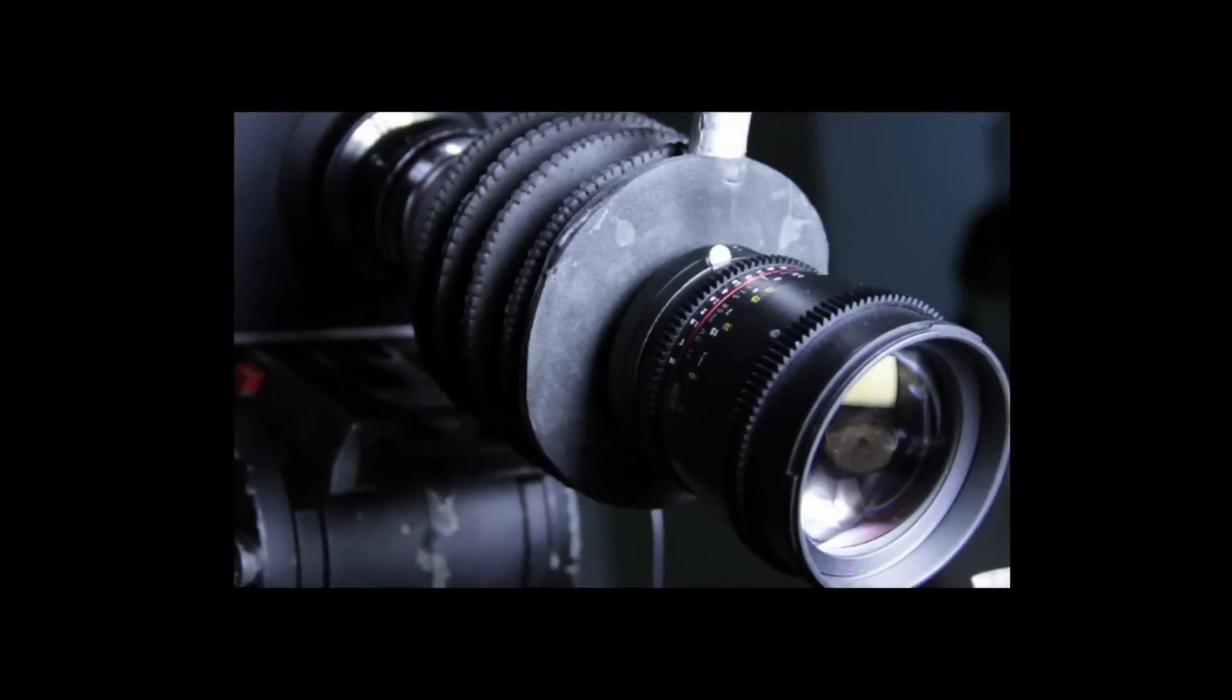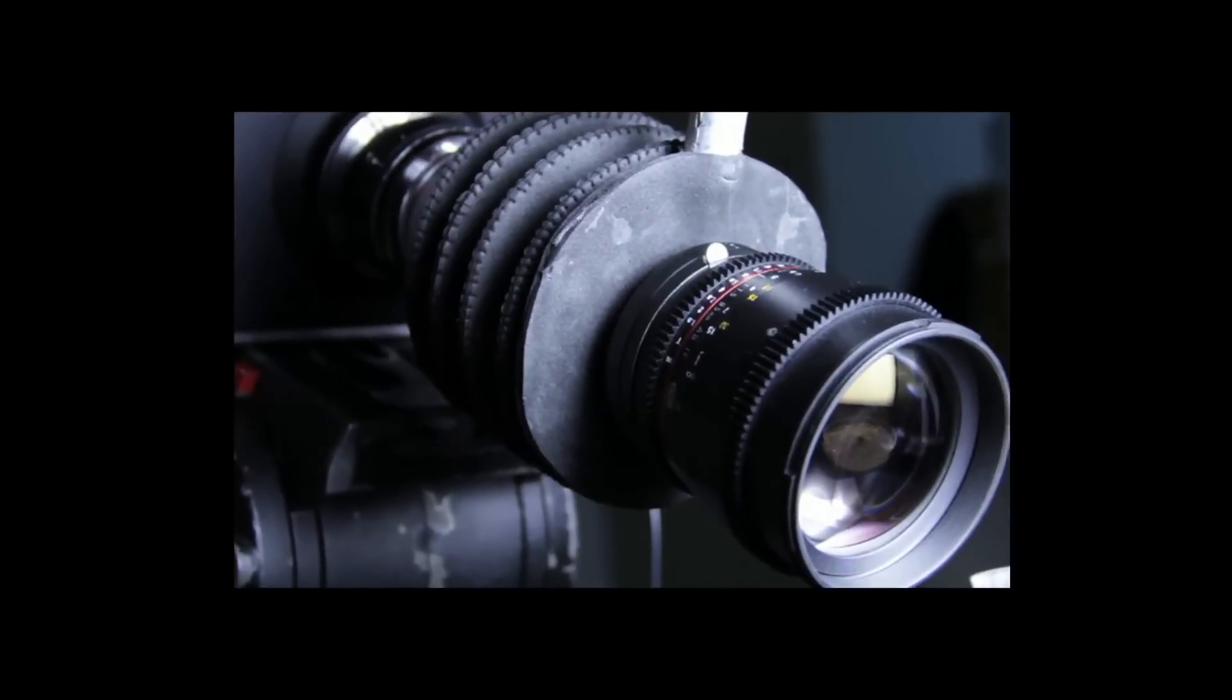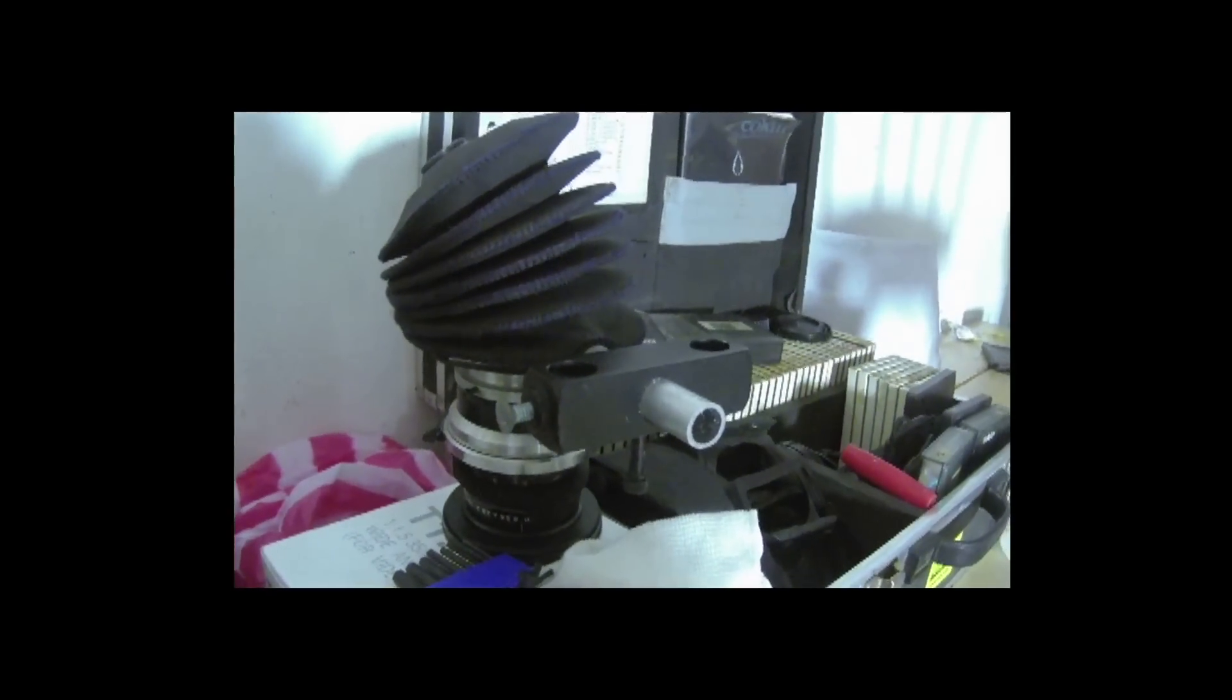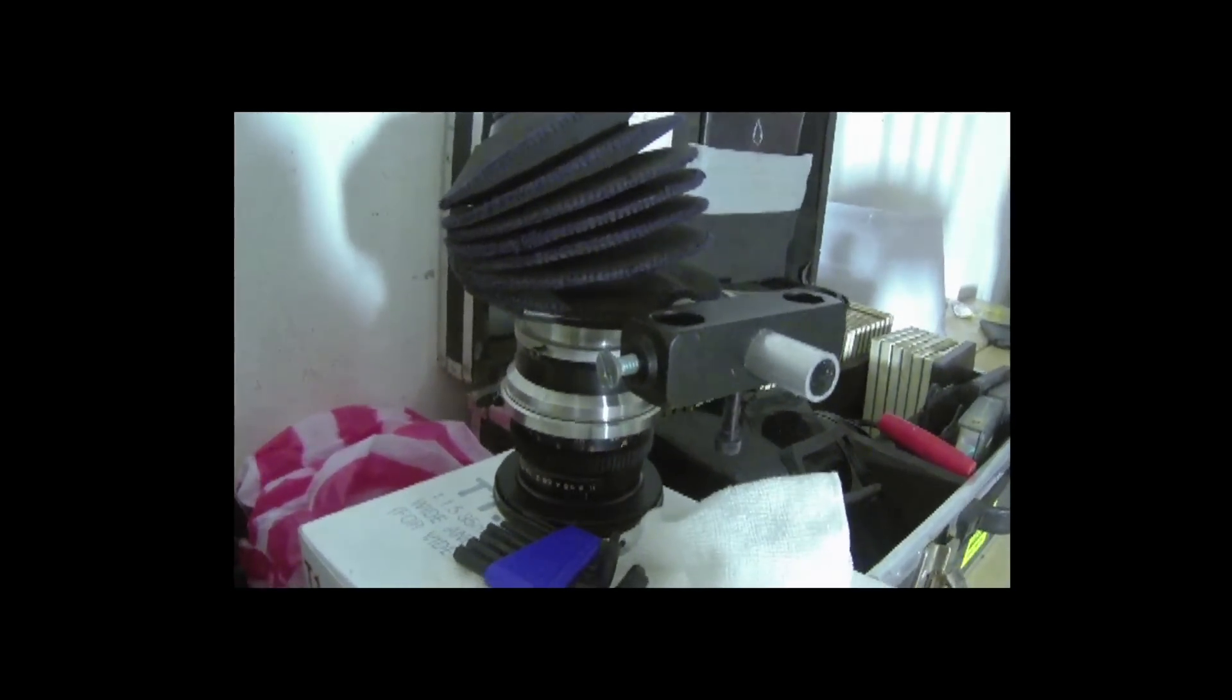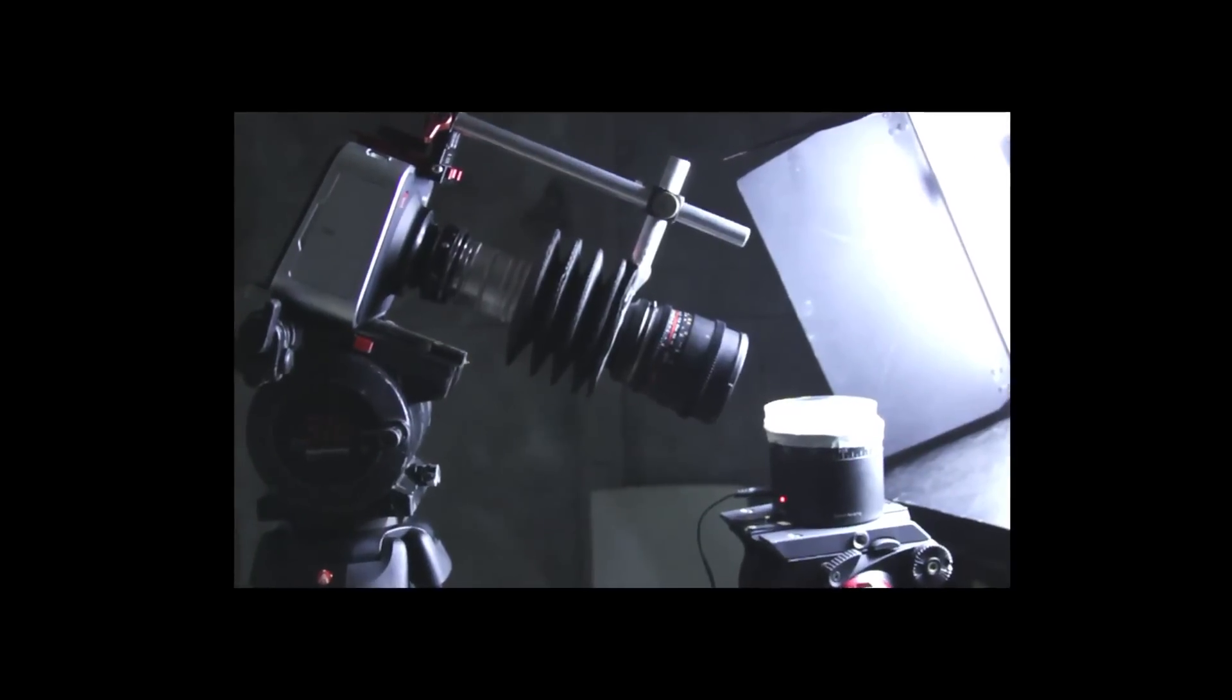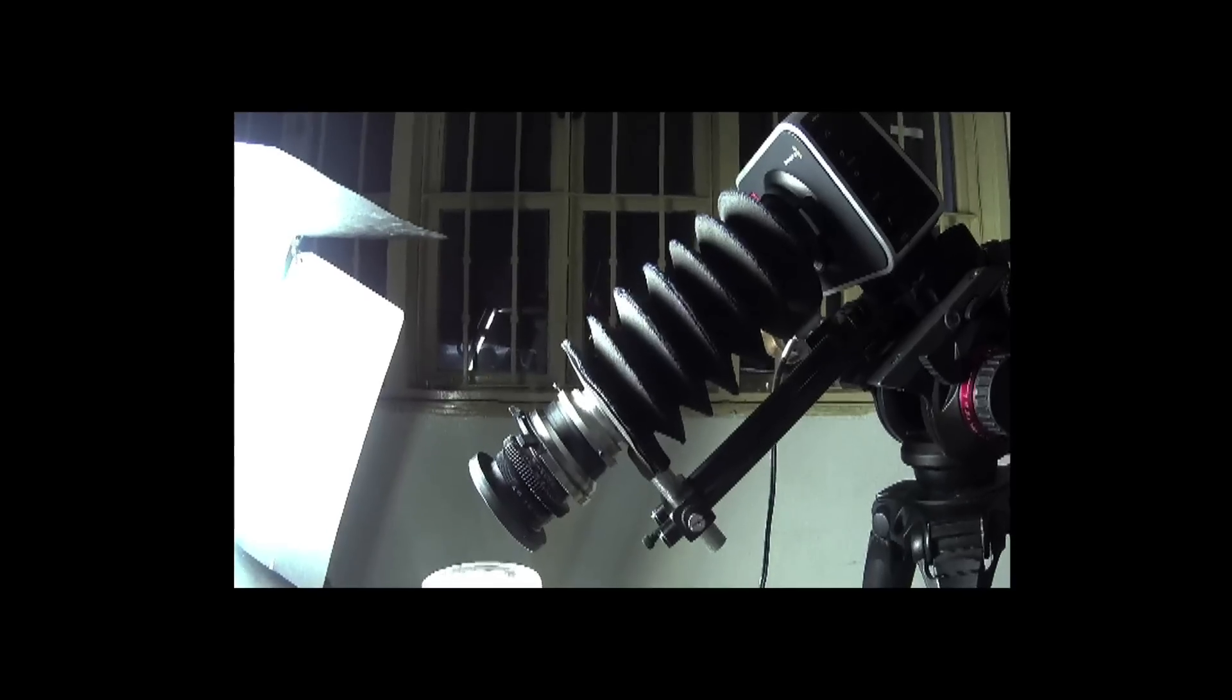I used two different lenses for this project. A Samyang or Rokinon 85mm and a Carl Zeiss high-speed 25mm prime. Both had very long extension bellows that I made myself. They cost next to nothing and were relatively simple to make.